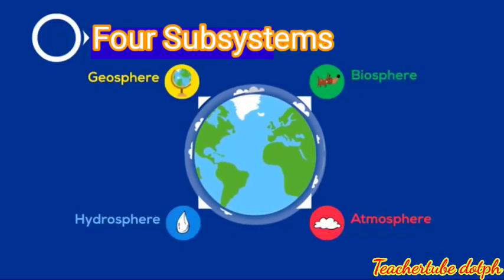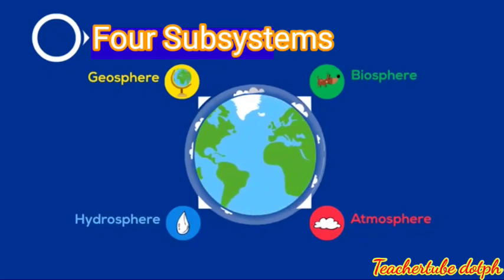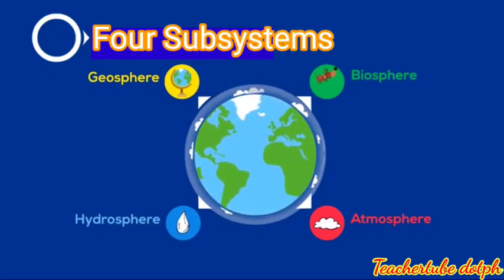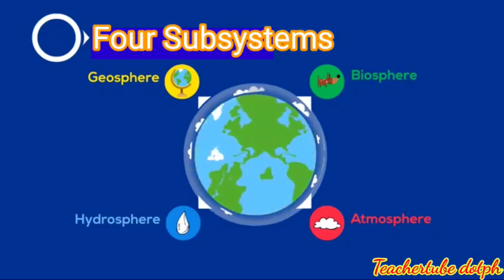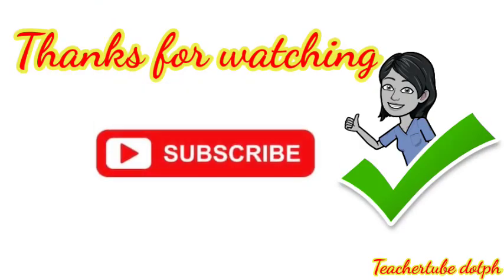In summary, the Earth is made up of four subsystems: the geosphere, hydrosphere, biosphere, and the atmosphere. Thank you.